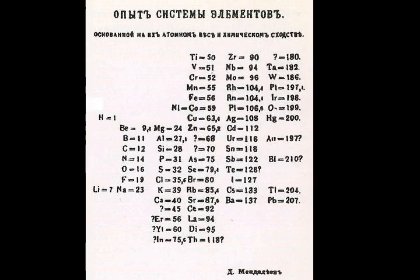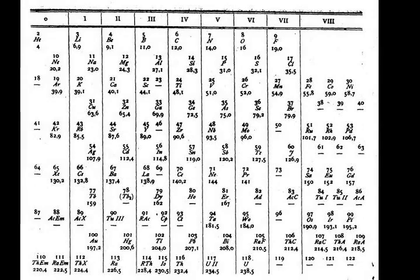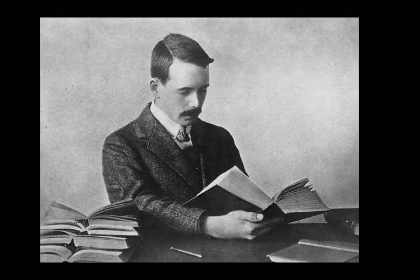The 2s subshell is completed by the next element, beryllium. The following elements then proceed to fill up the p orbitals. Boron puts its new electron in a 2p orbital, carbon fills a second 2p orbital, and with nitrogen all three 2p orbitals become singly occupied. This is consistent with Hund's rule, which states that atoms will prefer to singly occupy each orbital of the same type before filling them with the second electron. Oxygen, fluorine, and neon then complete the already singly filled 2p orbitals; the last of these fills the second shell completely.